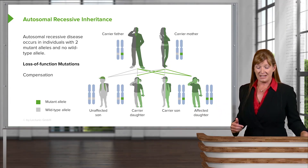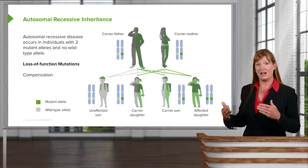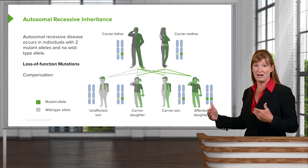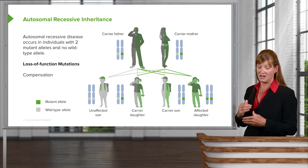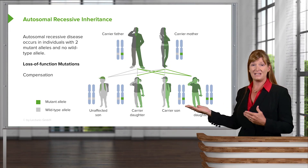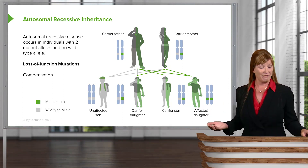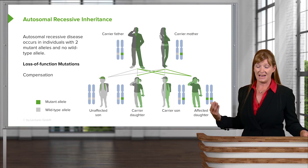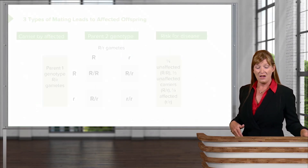In these types of matings, we end up having unaffected individuals, carrier individuals — you can see both the son and daughter in the middle — and affected individuals. Usually, one-fourth will be affected in a mating between two heterozygotes.